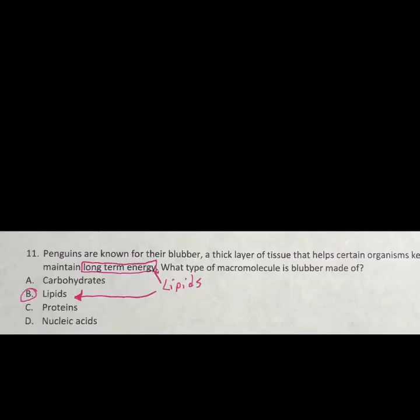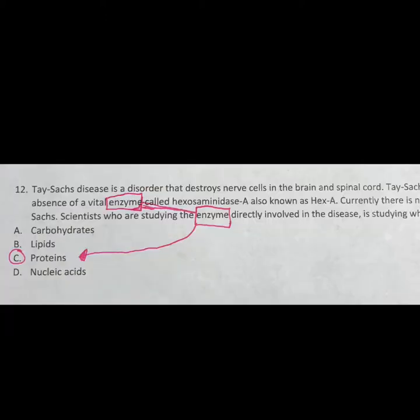Number eleven is about penguins in the cold and blubber and fat — but none of that matters. The key is long-term energy. What gives long-term energy? Blubber is made of fat, which is lipids. Remember: carbohydrates give short-term energy, proteins build muscle and repair tissue, nucleic acids carry genetic information, and lipids provide long-term energy. All you had to do again was know your function.